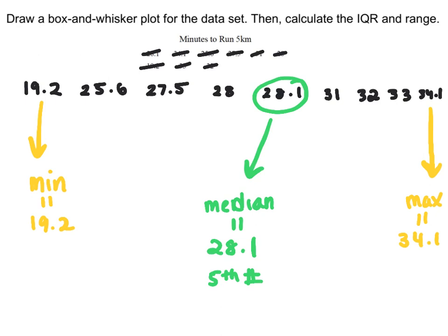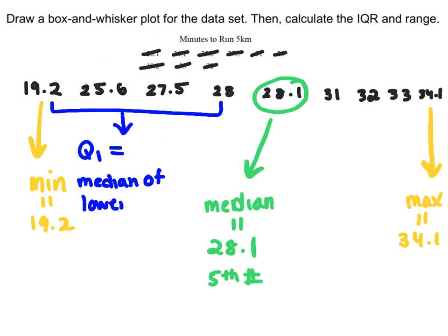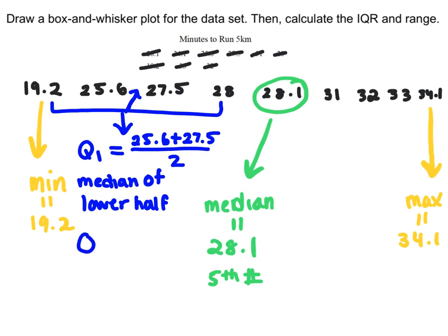Now the remaining calculations are for Q1. Q1 is the median of the lower half. Looking at the lower half, we have 4 points, so the median goes in between the two middle numbers. We do 25.6 plus 27.5 divided by 2, which gives Q1 equals 26.55.